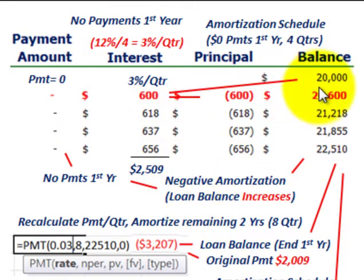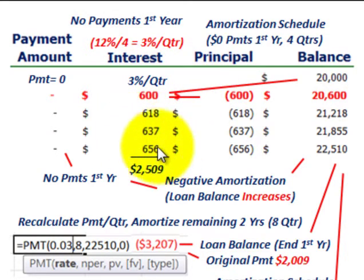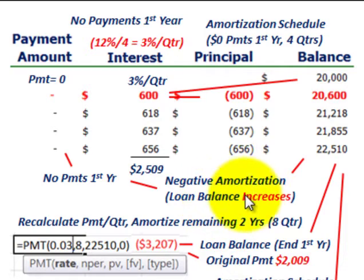This is the negative amortization — our loan balance is actually increasing. We started with $20,000 owing on this note, but by the end of year one, we owe $22,510. The total interest accrued during year one is $2,509, and adding that to the $20,000 gives us the new carrying value of $22,510 on this note.